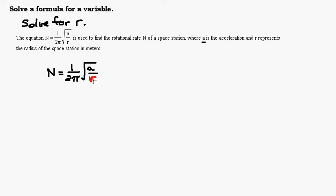So just to highlight the fact we're getting r by itself, let's go ahead and make this r red. We look on the side of the equal sign where the r is, which is on the right-hand side, and we've got all this stuff over here. The first thing I would get rid of is the 1 over 2π. Since the 2π is in the denominator, we're going to multiply both sides by 2π, which will cancel this 2π. So I'll go ahead and write times 2π on both sides.